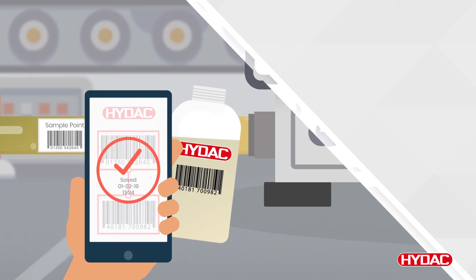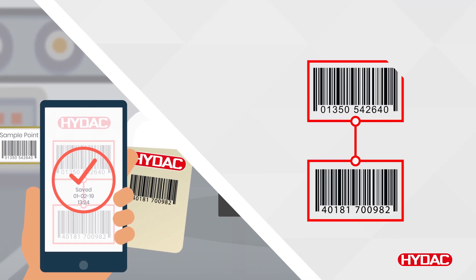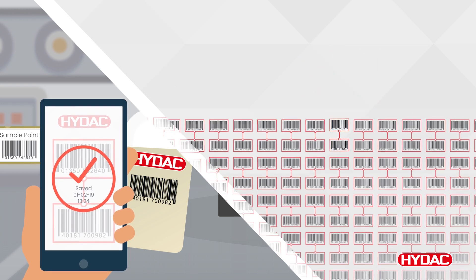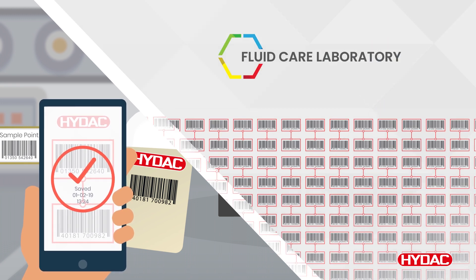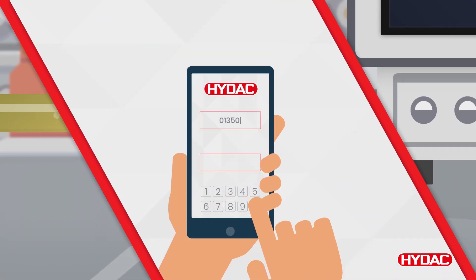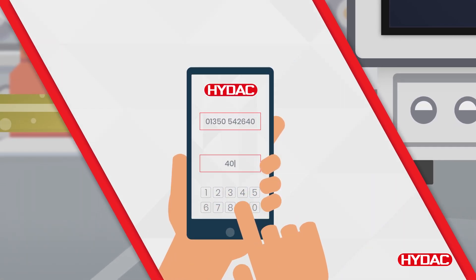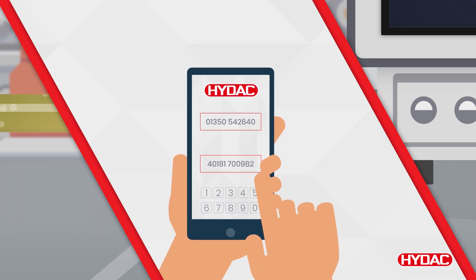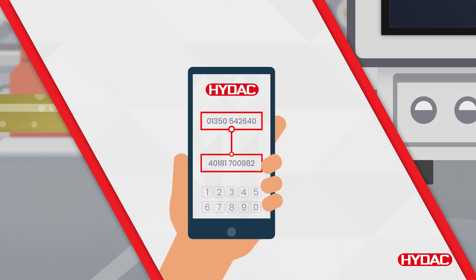This link is then sent to the HIDAC CMX laboratory platform where it is stored in a database, ready to be accessed by the fluid care laboratory. If it is not possible to scan the barcodes, the identification numbers can be input manually and the link will still be created.